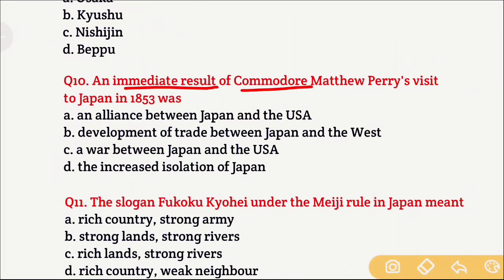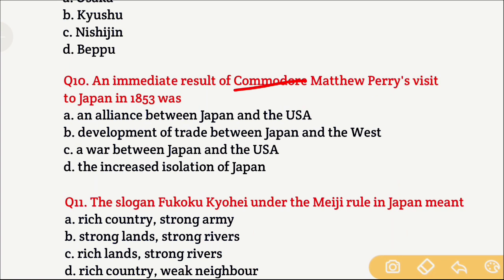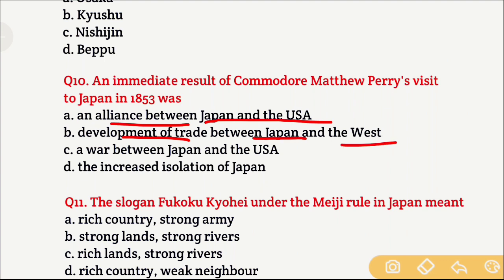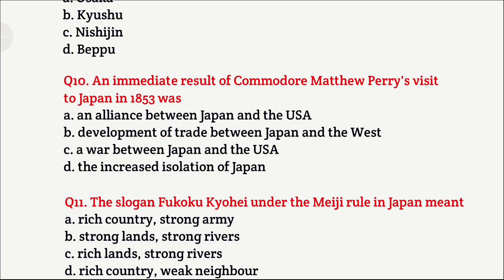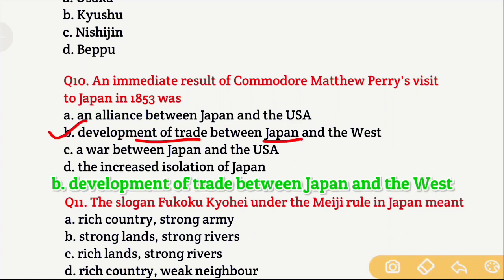Question 10: An immediate result of Commodore Matthew Perry's visit to Japan in 1853 was — Perry was a US official sent to Japan in 1853. Option A is an alliance between Japan and USA, Option B is development of trade between Japan and the West, Option C is a war between Japan and USA, and Option D is the increased isolation of Japan. The right answer is Option B — development of trade between Japan and the West.